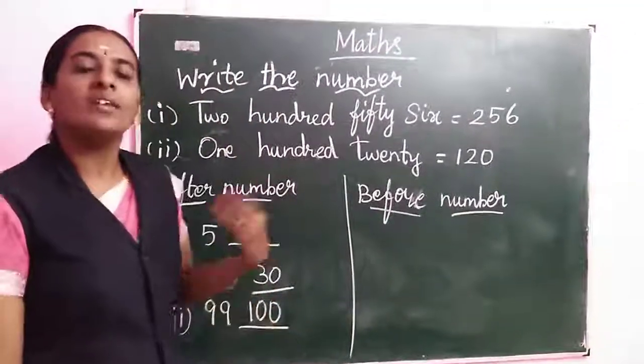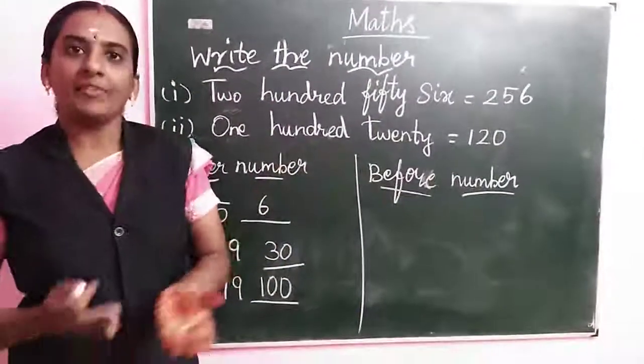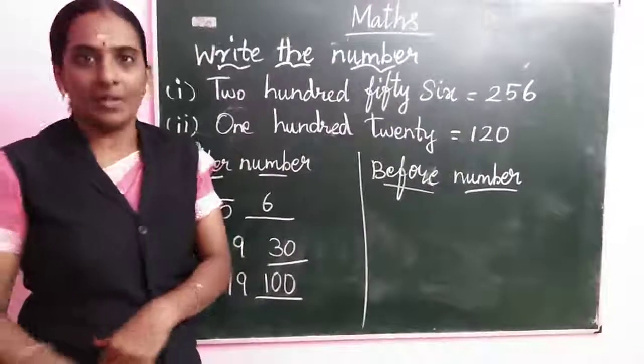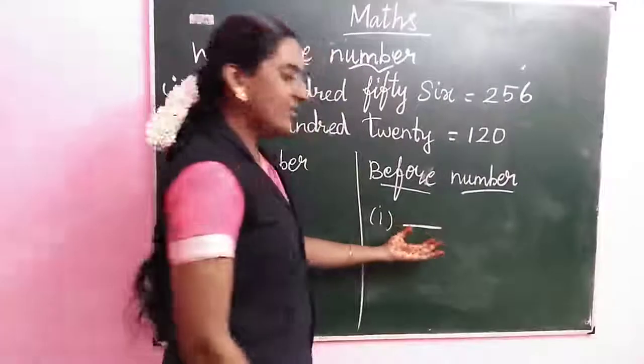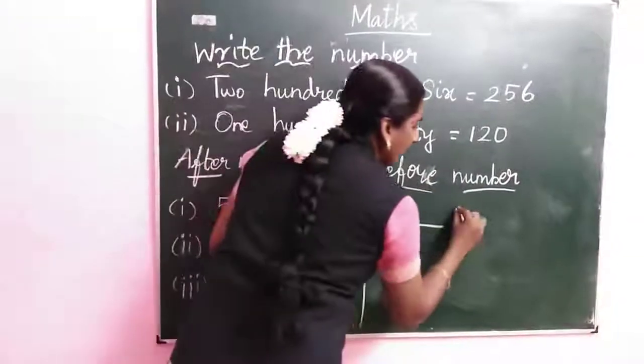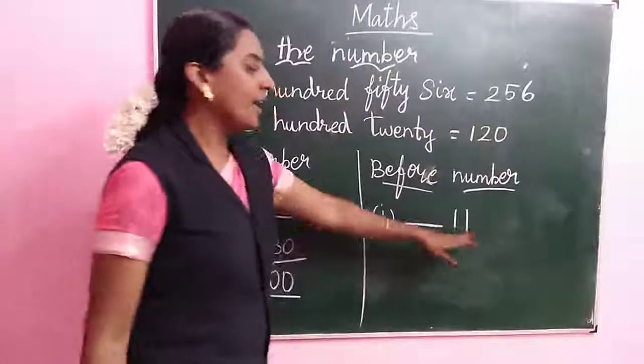What is the before number? Front. In front of number. In front number, that's the number. First one, 11. 11 before.